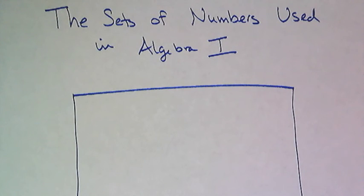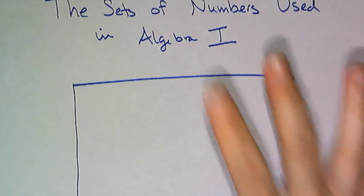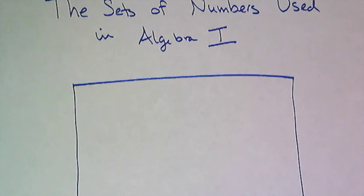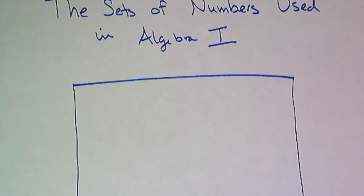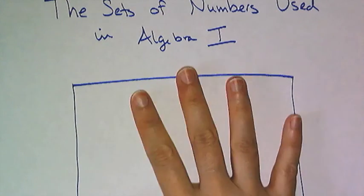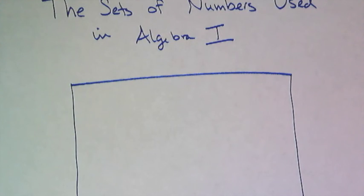In this clip, I'm going to talk to you about the sets of numbers used in Algebra 1. Now this is going to be a quick overview, and if you'd like more information on any one of the individual sets that I'm going to be talking about, I refer you to chapter 1 of the AlgebraNomicon, which will be linked to both this video and the in-class assignment. So let's begin.